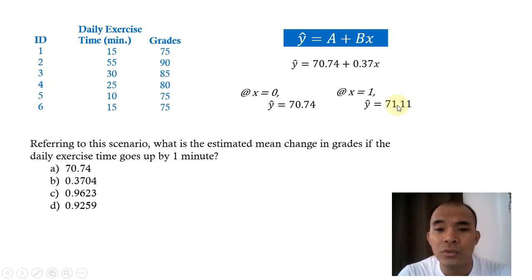In order to get the mean change, we just have to subtract this one, 71.11 minus 70.74, so that is equal to 0.37.